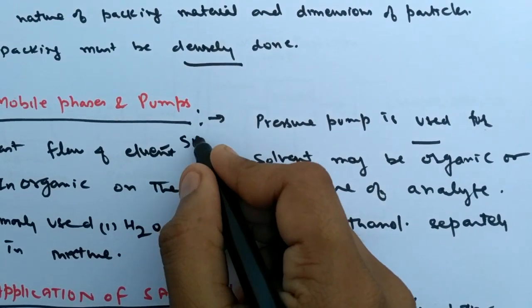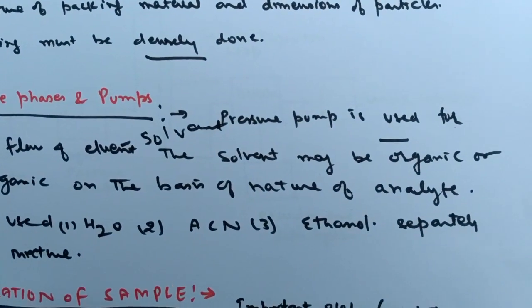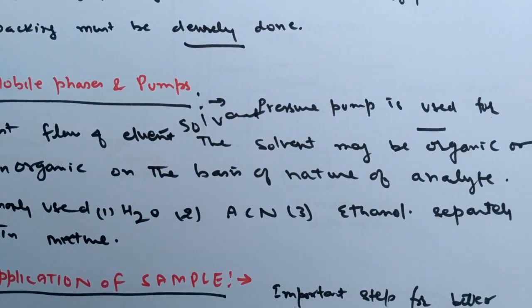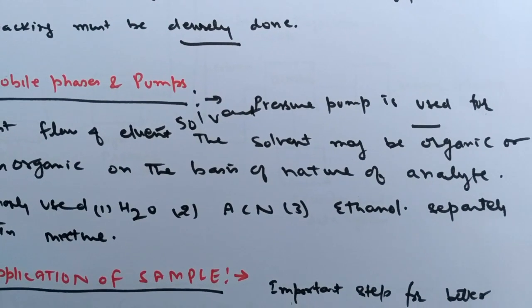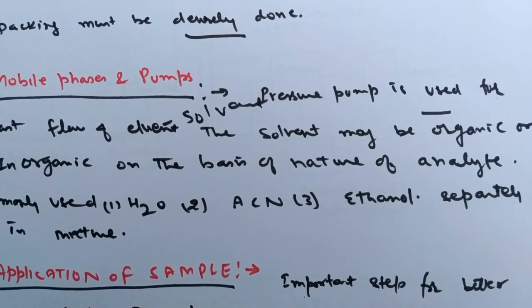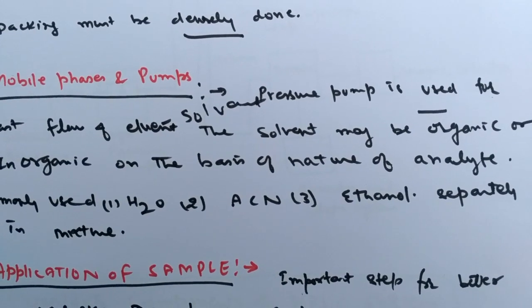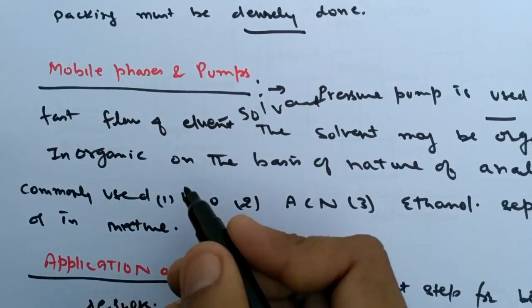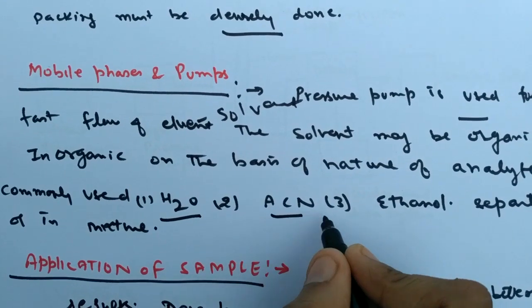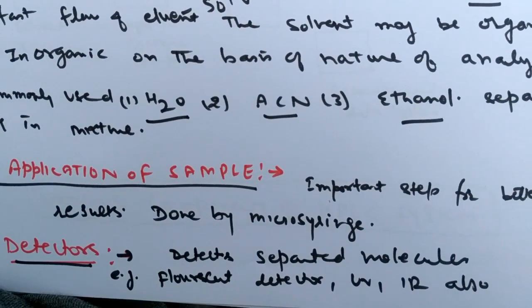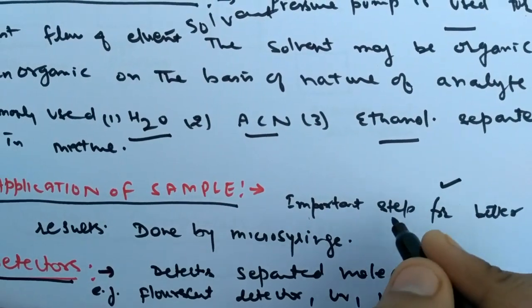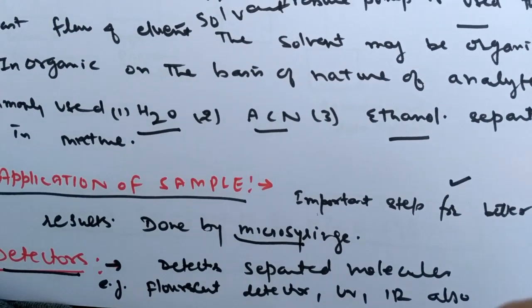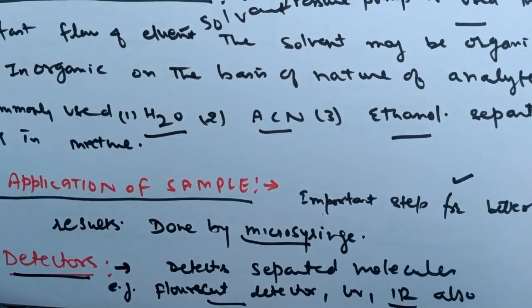For the mobile phase and pump, pressure pumps are used for fast flow. The solvent runs along with the solute. The solvent may be organic, inorganic, or a mixture of both, and the choice of solvent depends on what we are separating. For polar substances we need more polar solvent. Most commonly used solvents are water, acetonitrile, and ethanol. Sample application is done by microsyringes. Detectors include fluorescent detector, UV detector, and infrared detector.